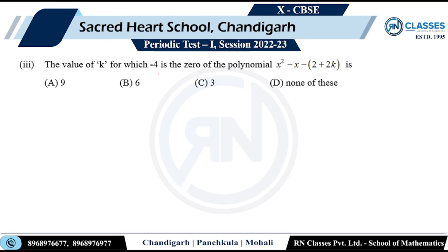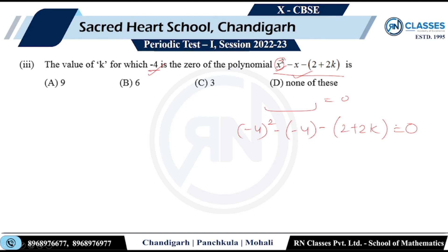The next question asks for the value of K for which minus 4 is the zero of the polynomial. If minus 4 is the zero, replacing X by minus 4 makes the polynomial equal to zero. So: (-4)² - (-4) - 2 + 2K = 0. Solving this, K turns out to be 9.